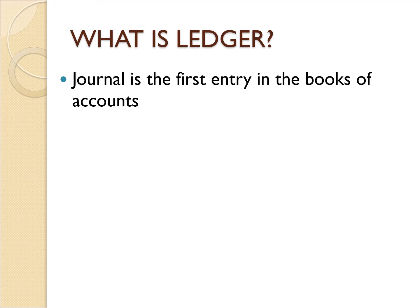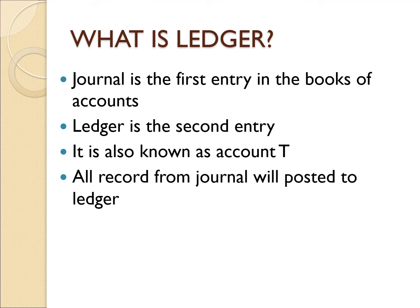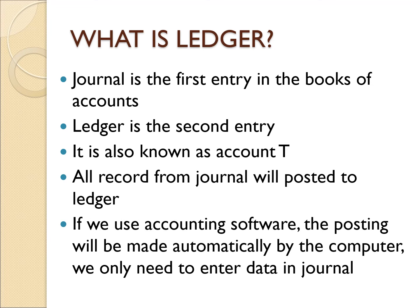Journal is our first entry in the books of accounts, and the ledger is the second entry of transactions. It is also known as the T-account, and all records from the journal will be posted to the ledger. If we use accounting software, the posting will be made automatically by the computer, so we only need to enter data in the journals.